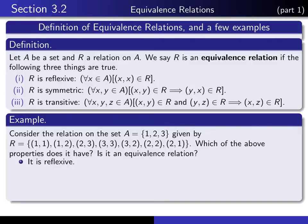Now what about symmetric? Symmetric means whenever (X, Y) is in the relation, then (Y, X) is necessarily in the relation. Look at (1, 2) — is (2, 1) also in there? Yes. And look at (2, 3) — (3, 2) is also in there. That covers all possibilities. Therefore, it is symmetric.